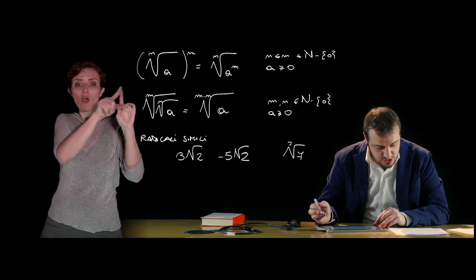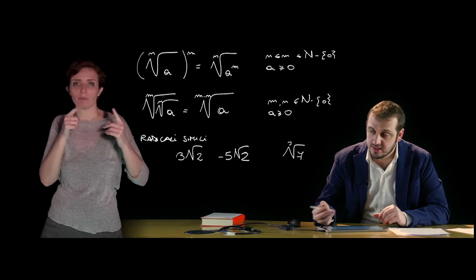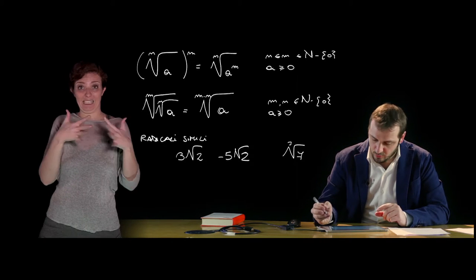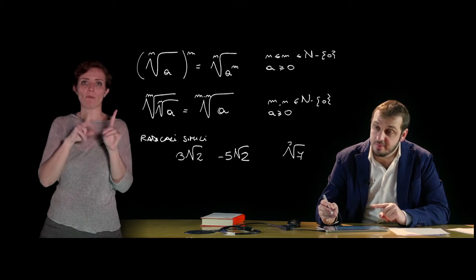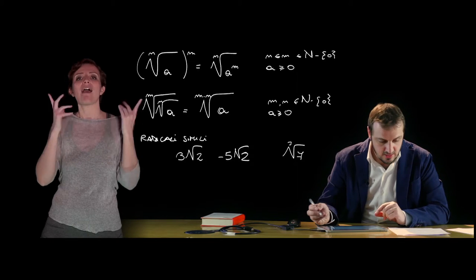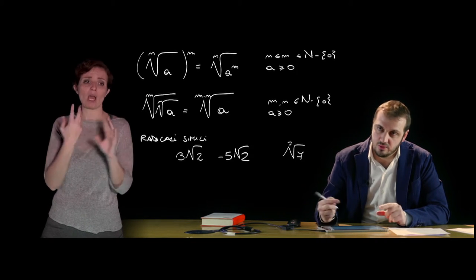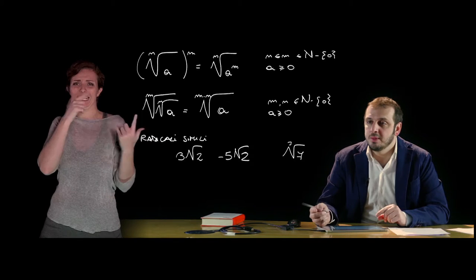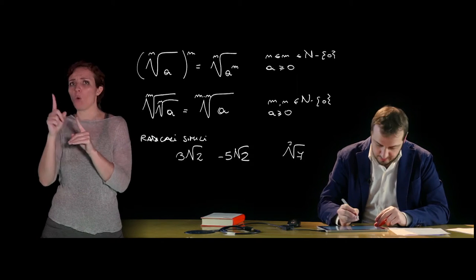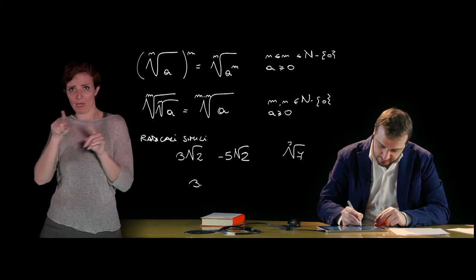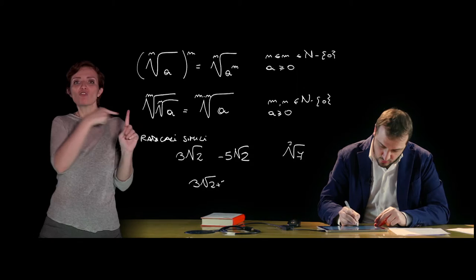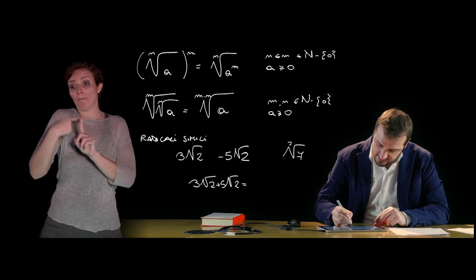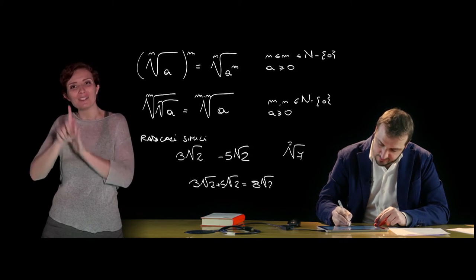When radicals are similar, addition and subtraction apply: the algebraic sum of two or more similar radicals is a radical similar to those given, with a coefficient equal to the algebraic sum of their coefficients. For example, 3√2 + 5√2 = 8√2.